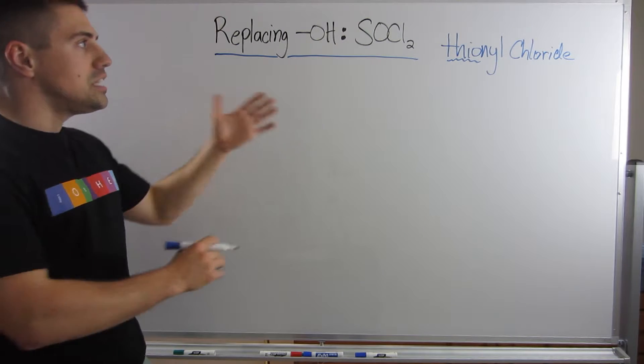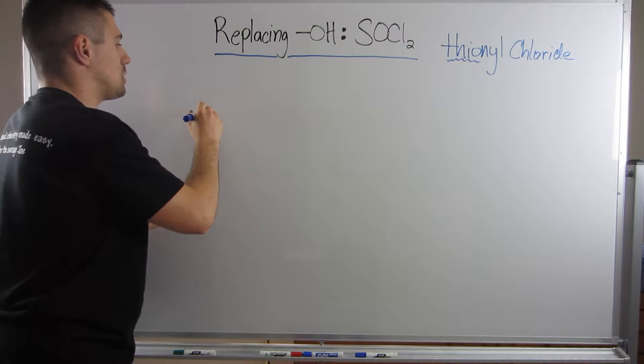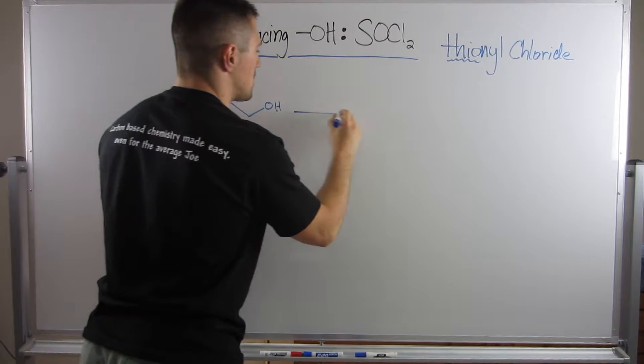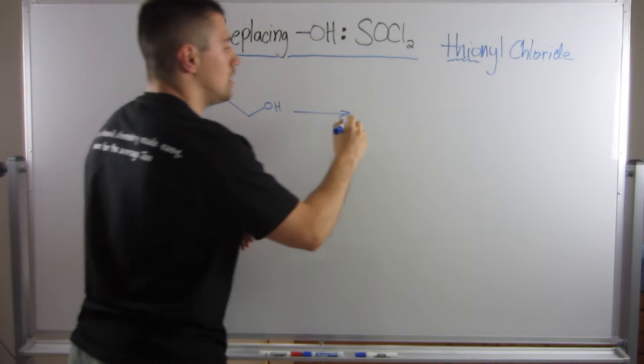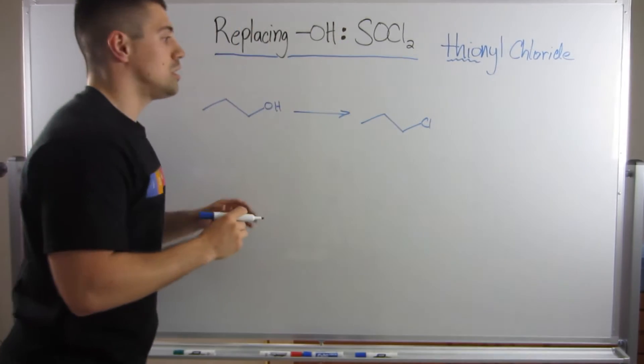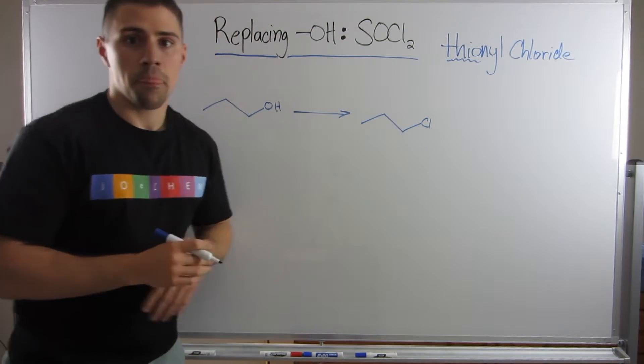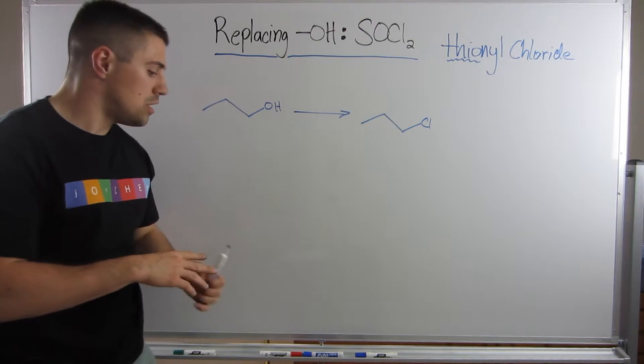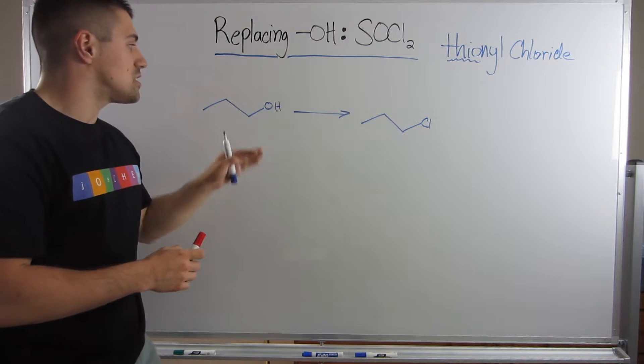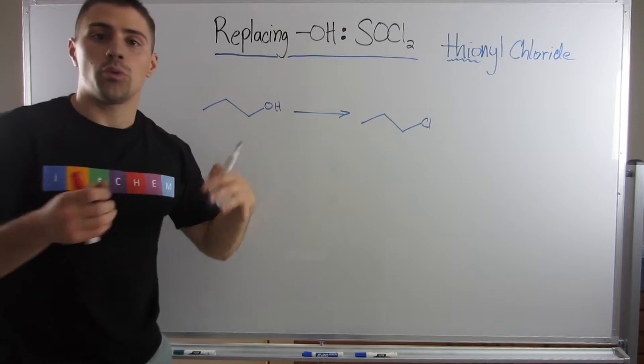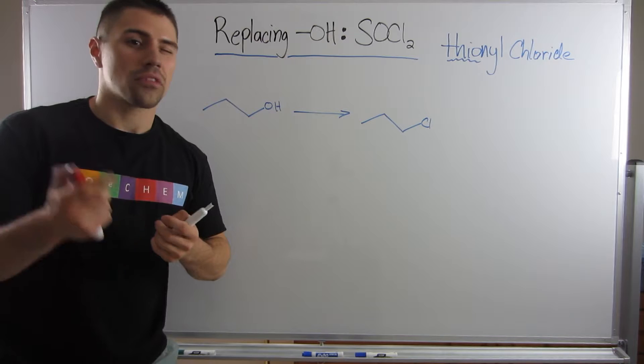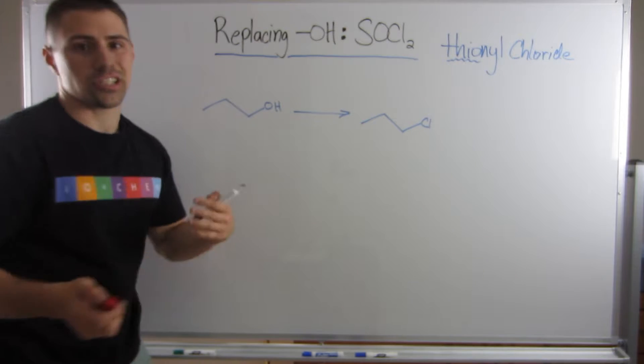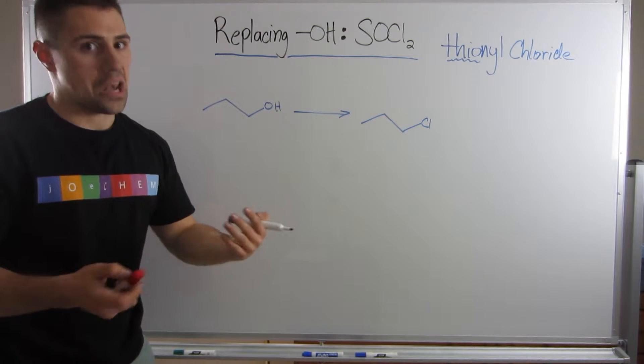So what you need to know about this, let me just give you an example of a mechanism. Let's look at something along the lines of just propanol. Let's just say I want to replace this OH with a chlorine. And before we talk about SOCl2, the way you'd have to do this - because if you think about this, this would be a very quick one-step SN2 reaction, right? However, the only thing that prevents us from doing that is the fact that OH is kind of a crappy leaving group, right? Not the best.